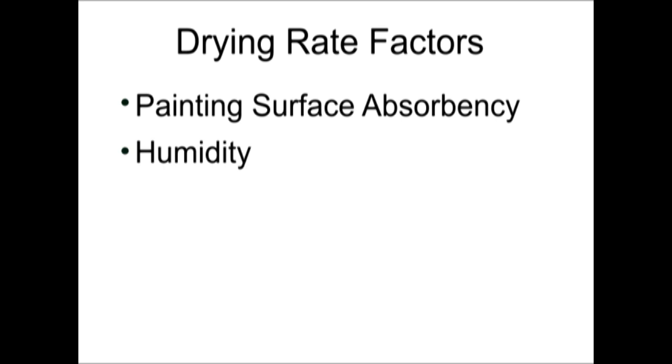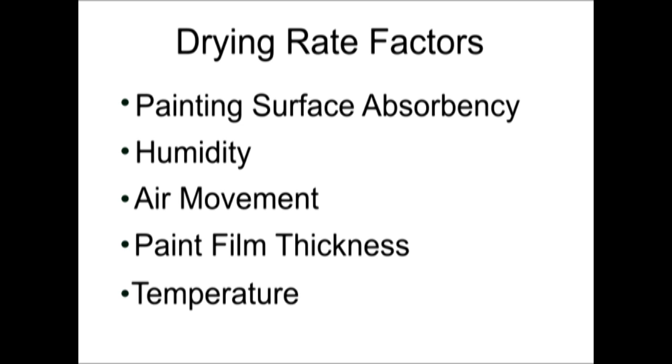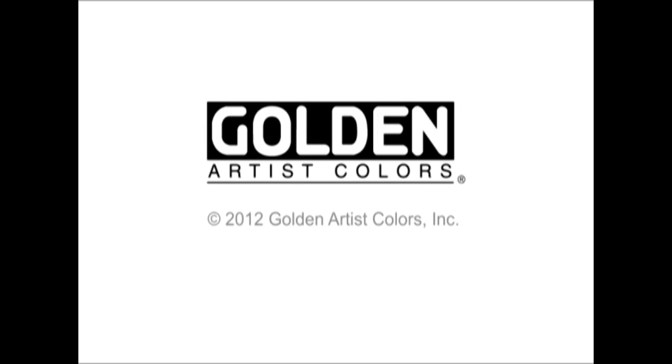To summarize, when your paint is drying too quickly or too slowly, look towards these factors as the best way to control the drying rate: painting surface absorbency, humidity, air movement, paint film thickness, and temperature. For more information, please visit GoldenPaints.com.